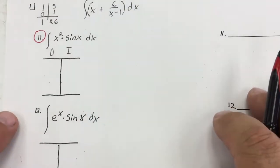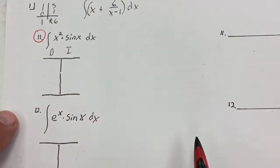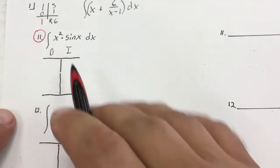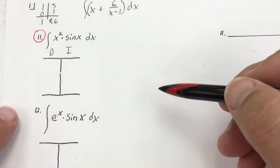For number 11, this one's special. I can't use u-substitution. I have to use a method called integration by parts, but I use a different method called the tabular method.